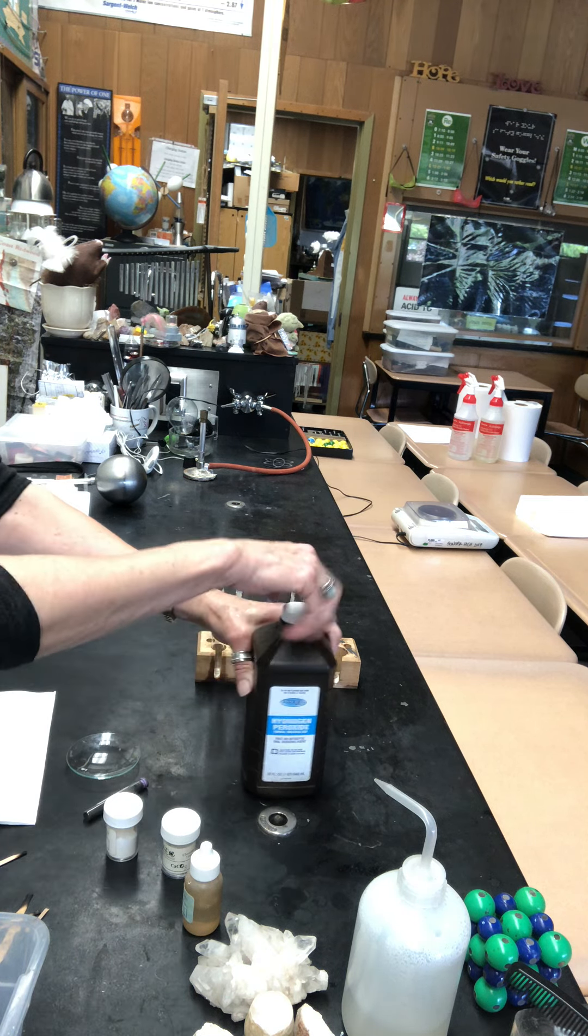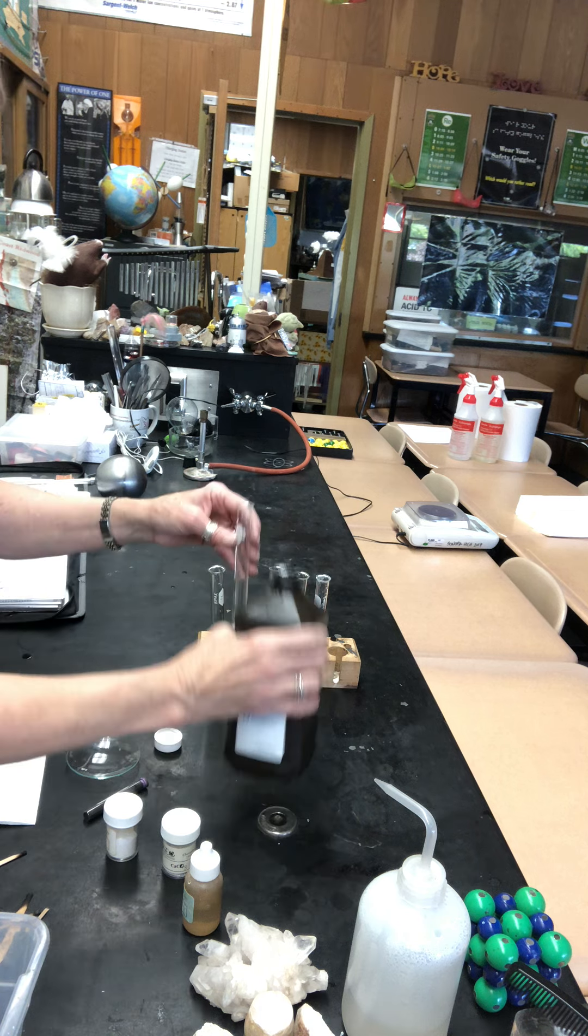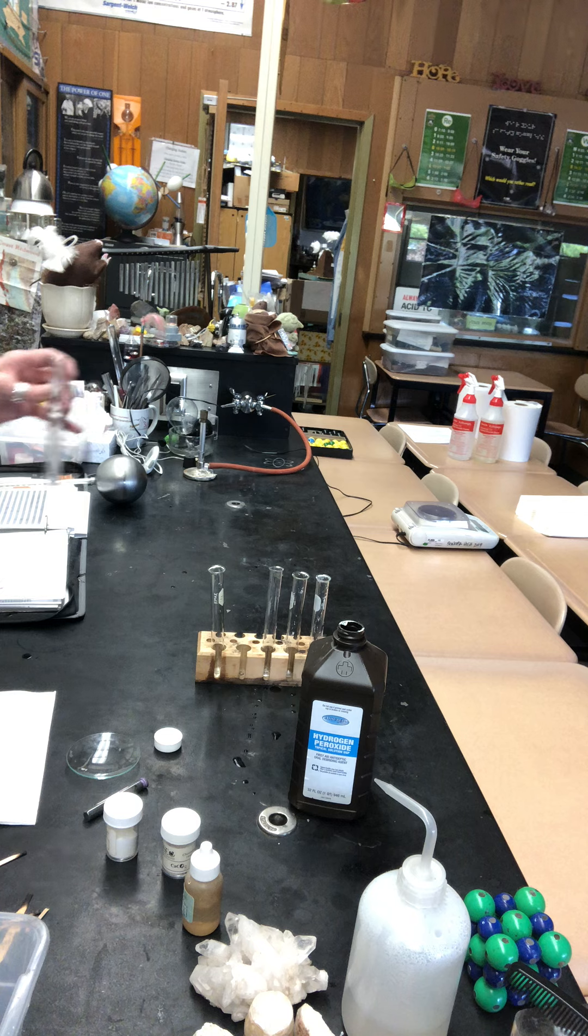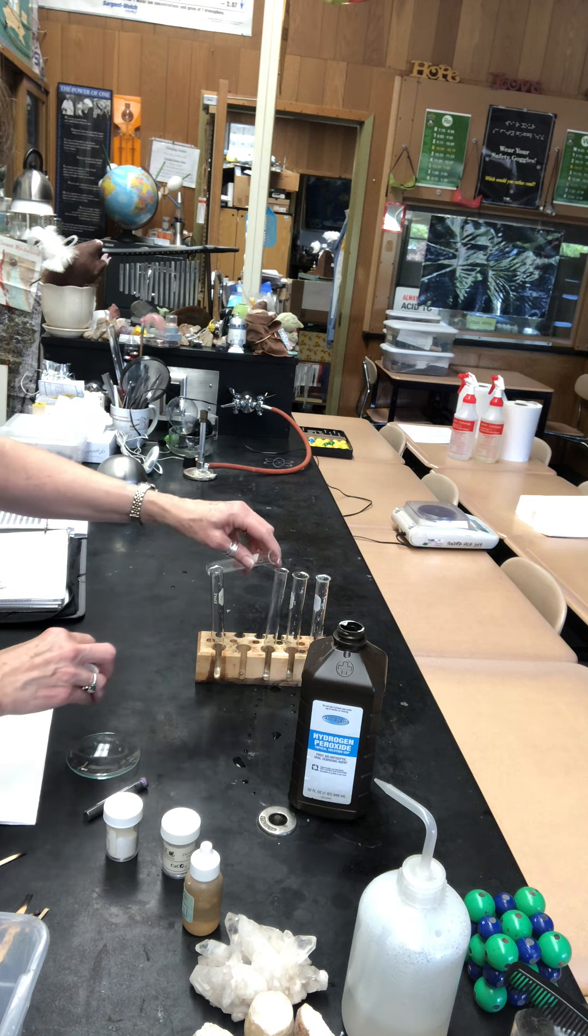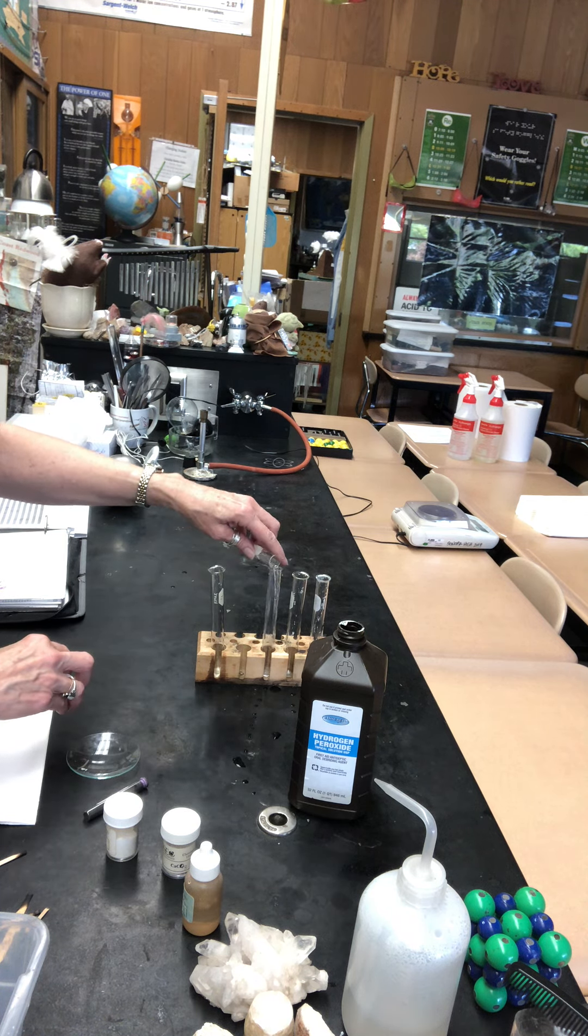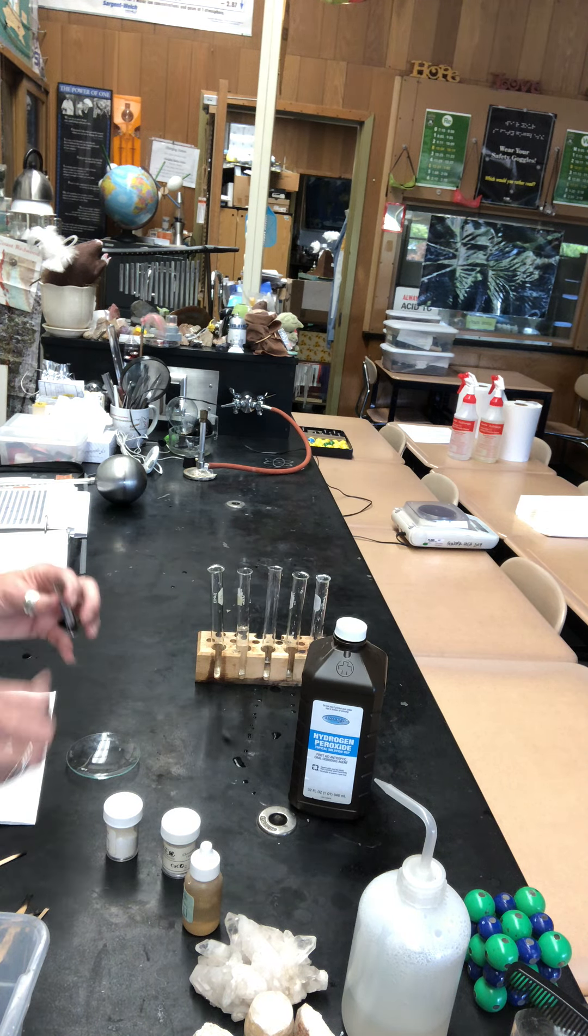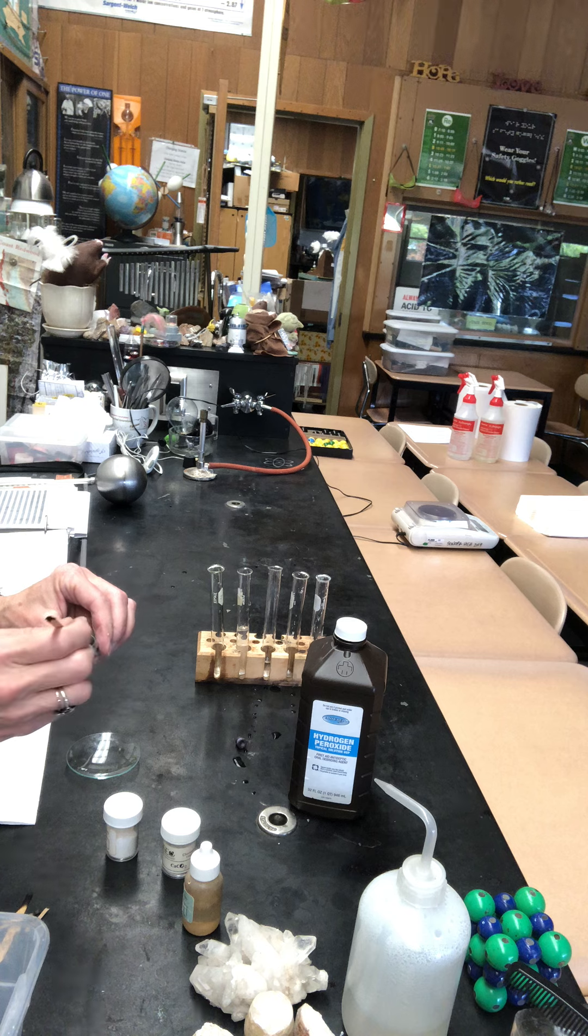When you pour hydrogen peroxide into the test tube it looks just like water. Whoops, that's a little bit much. I'll just pour it off here. This time we're going to speed up the decomposition of the hydrogen peroxide by adding the catalyst.